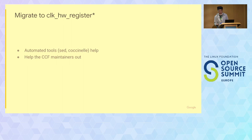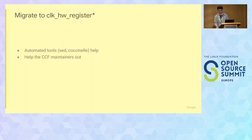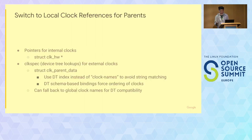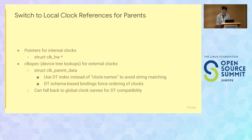We'd also like clock drivers to migrate to the new clock provider APIs, which start with clk_hw_register. There are a lot of instances where migration is needed. Automated tools like Coccinelle will help. By migrating, you're helping the clock maintainers deprecate and remove the old API. You can also switch your parent references from strings to local clock references, using either pointers or device tree lookups. If using device tree lookups, try to use indexes instead of strings, because string matching will still be slower than using indexes.